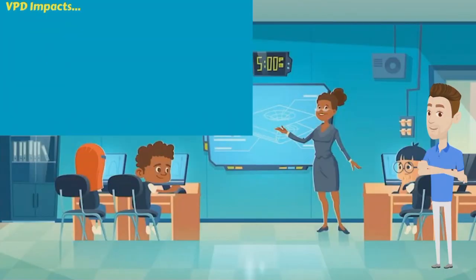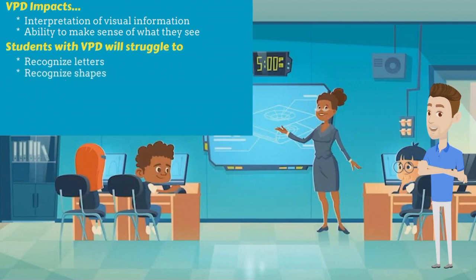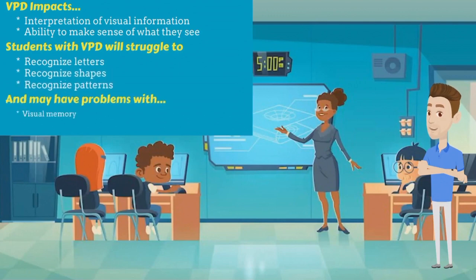Visual Processing Disorder is a learning disability that affects a student's ability to interpret and make sense of visual information. People with VPD may struggle with recognising letters, shapes and patterns, and may have difficulty with visual memory and visual spatial skills.